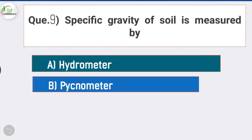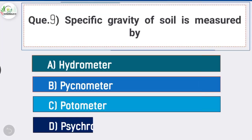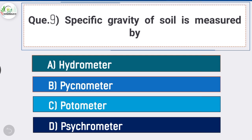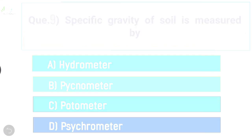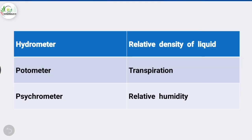Question number nine: specific gravity of soil is measured by pycnometer. Hydrometer measures relative density of liquids, potometer measures transpiration, and psychrometer measures relative humidity.